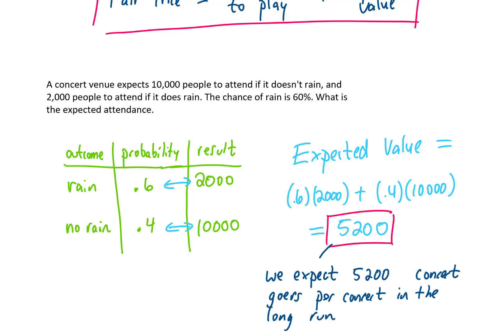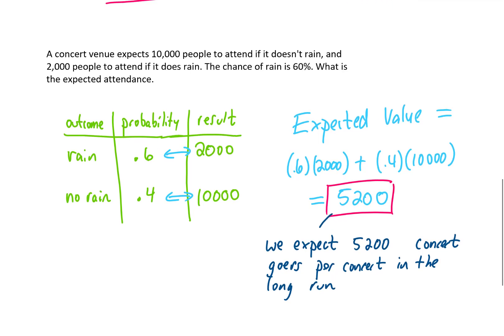Let's interpret it. What we just found was that in the long run, under these conditions, we expect an average of 5,200 concertgoers per concert. Now again, obviously you're never going to have exactly 5,200 concertgoers. We're assuming we're either going to get 10,000 or 2,000.